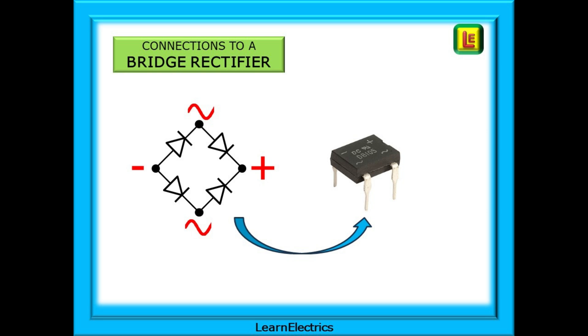The bridge rectifier must be connected in a specific manner. There will be two AC connections for the incoming supply, the voltage from the transformer, and a plus and minus for the DC output.